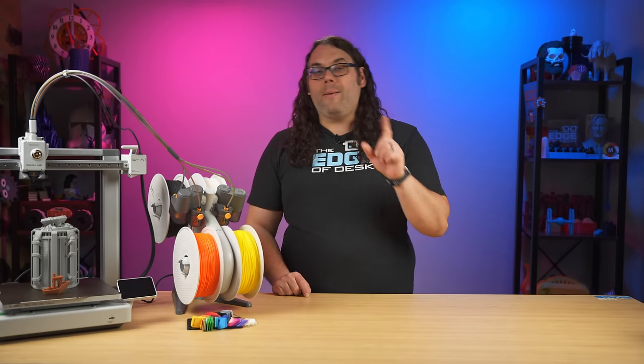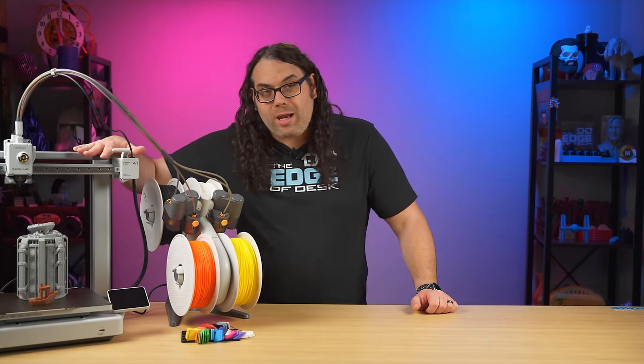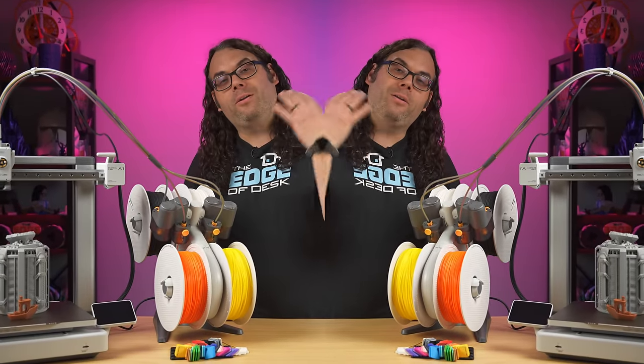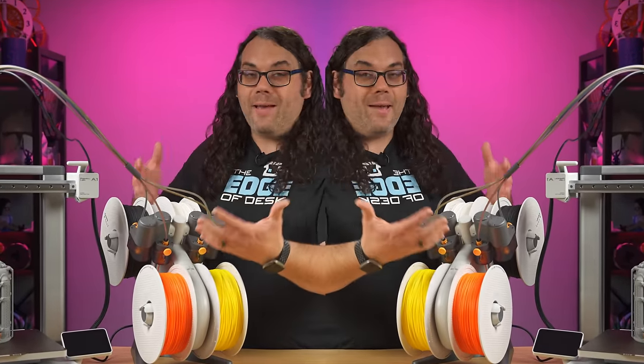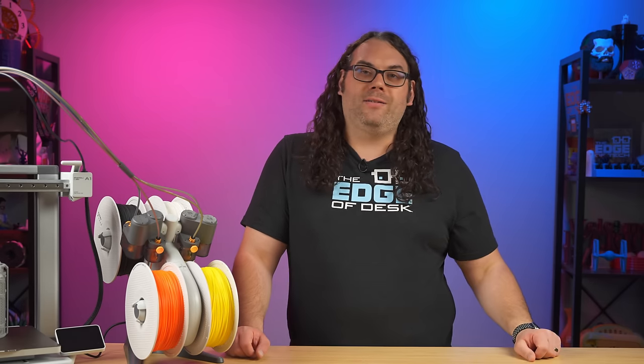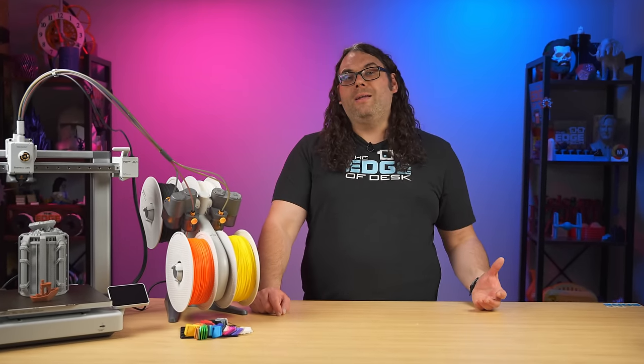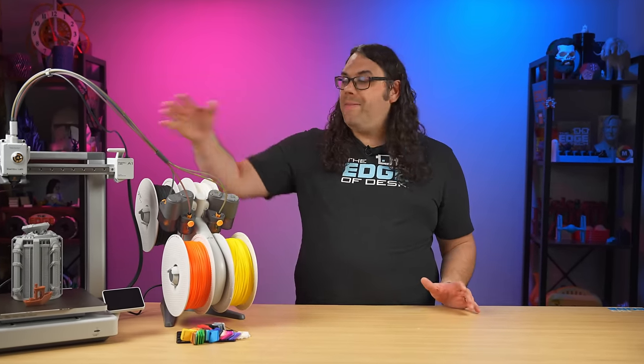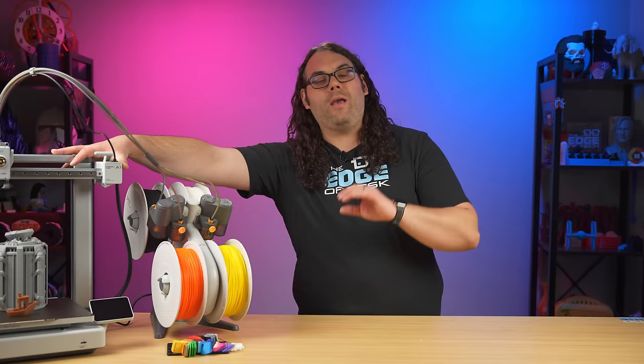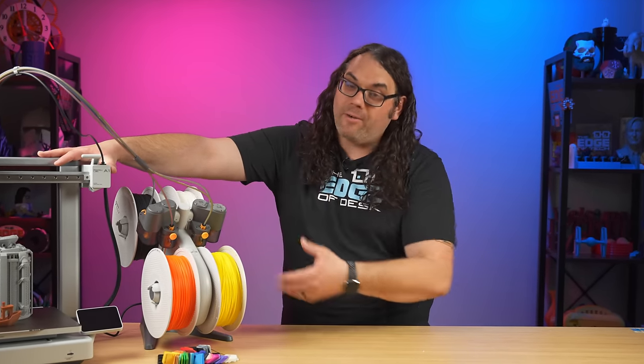Let me put it like this as an example. For one Prusa MK4 at $1,099, you could almost get three A1s. Or you can get two of them with four color multi-color printing with the AMS. And they come pre-built, ready to go in minutes right out of the box. That is just something that's really hard to overlook. I love the Prusa machines. I love what they do for the community, but this is a better value.